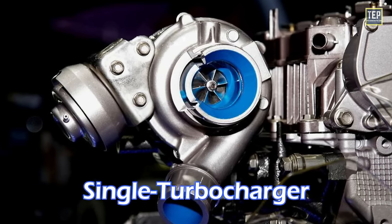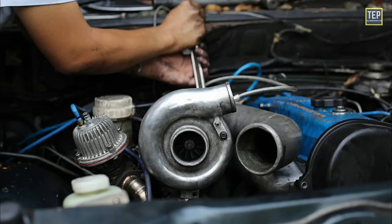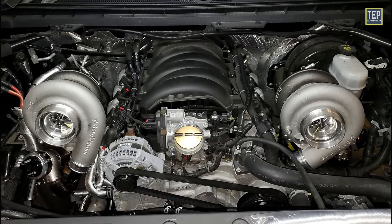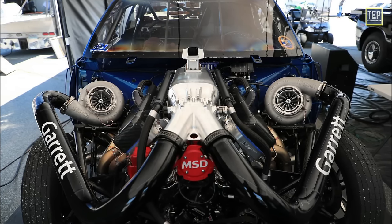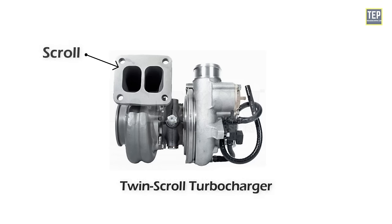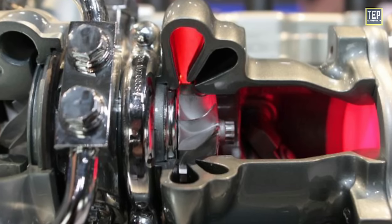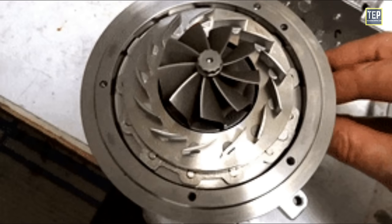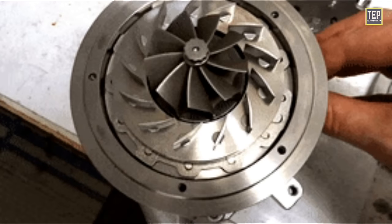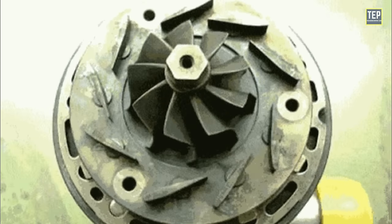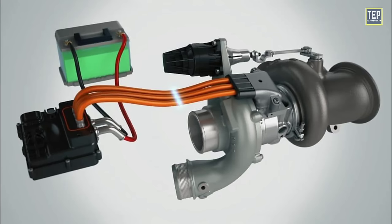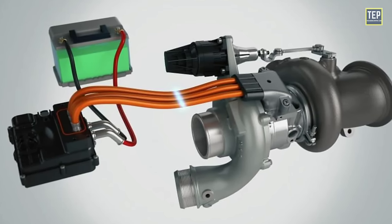In summary, a single turbocharger is the most basic type, typically used in small to medium-sized engines — simple, reliable, and cost effective. A twin turbocharger system uses two turbochargers, typically in larger engines, providing more power and torque. Twin scroll turbochargers have two separate scroll chambers for better exhaust gas flow and reduced turbo lag, found in larger engines for improved performance. A variable geometry turbocharger uses adjustable vanes to change the angle of the turbine and compressor wheels, commonly used in diesel and larger engines. Electric turbochargers use an electric motor to spin the turbine rather than exhaust gases, allowing instant boost and eliminating turbo lag, making them ideal for high-performance applications.